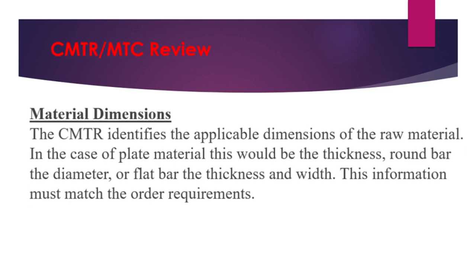The material dimension must also be mentioned in the CMTR or MTC. The CMTR identifies the applicable dimensions of the raw material. For plate material, the thickness is mandatory — length and breadth are not mandatory, but thickness must be mentioned. For round bar, the diameter must be mentioned. For flat bar, thickness and width must be mentioned. For pipe material, diameter and thickness or schedule must be mentioned. This information must match the order requirements.